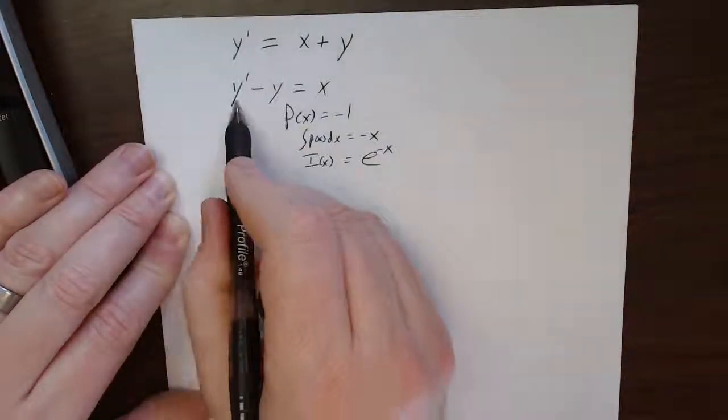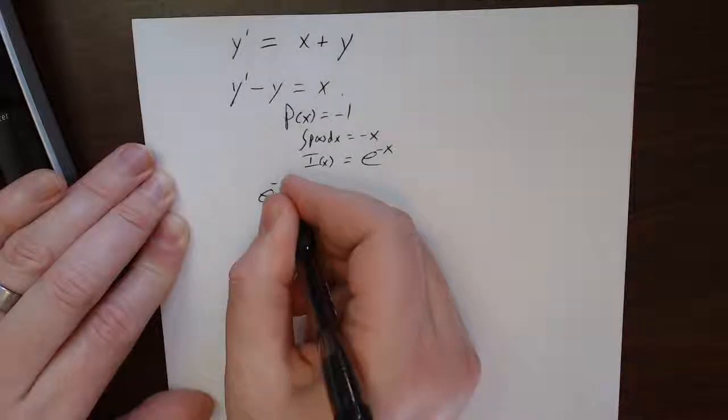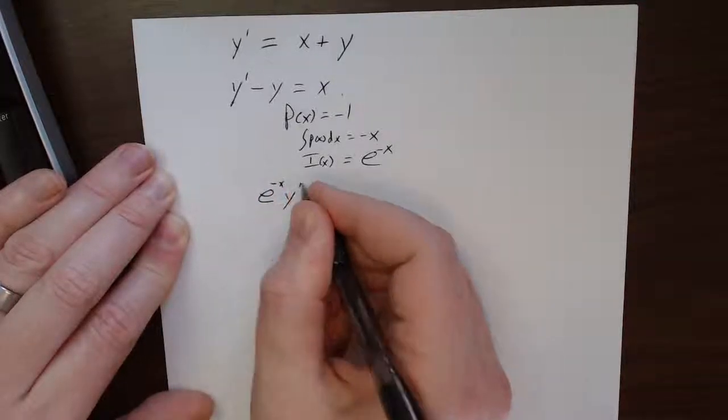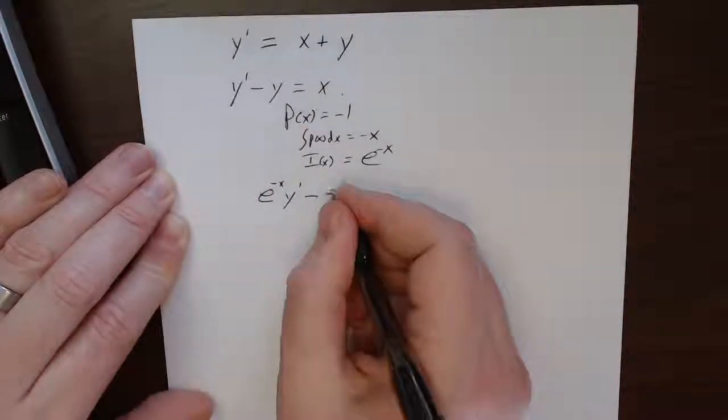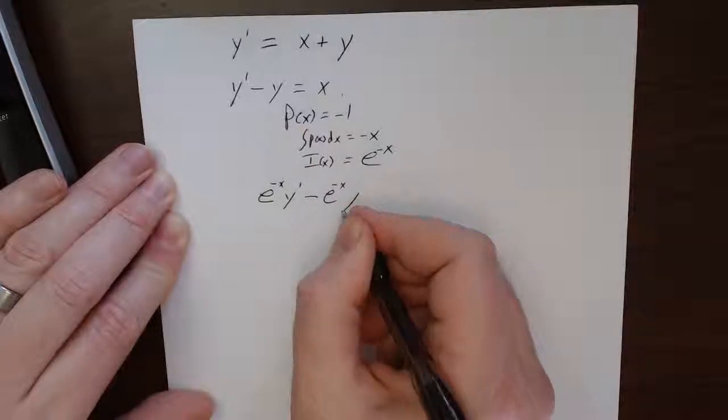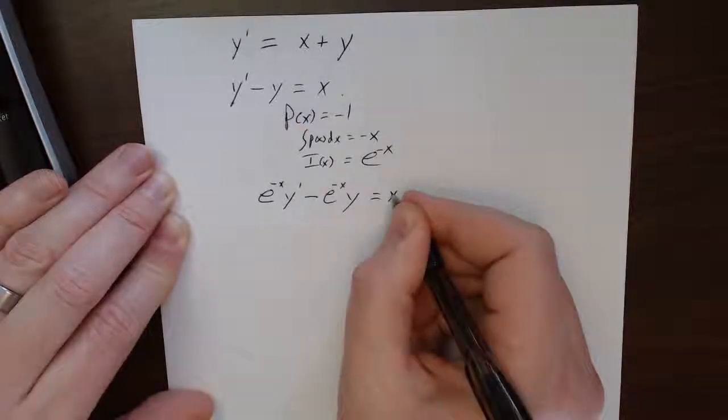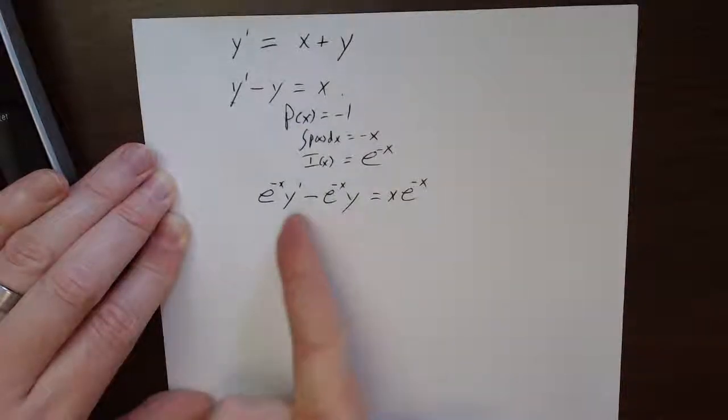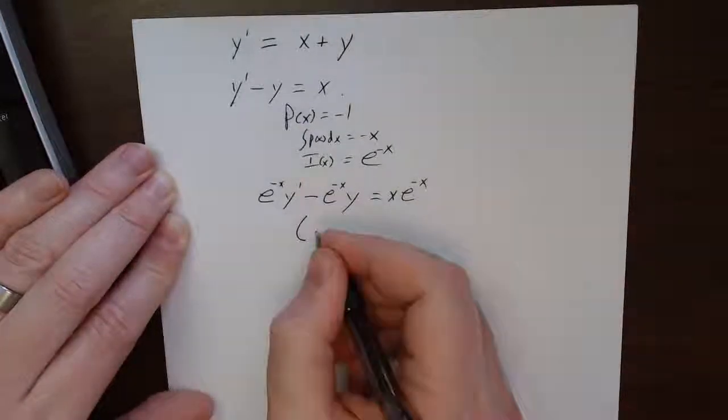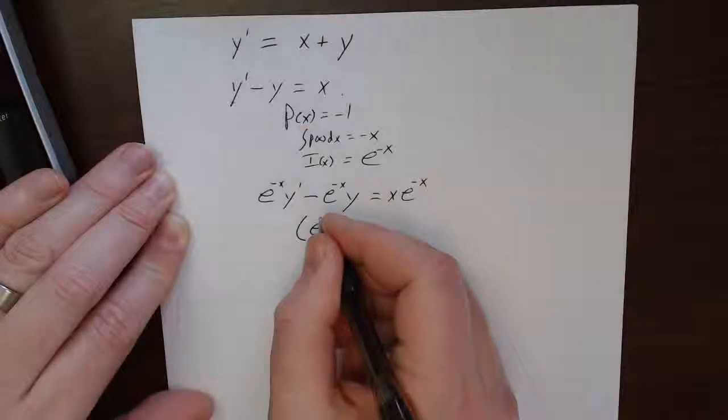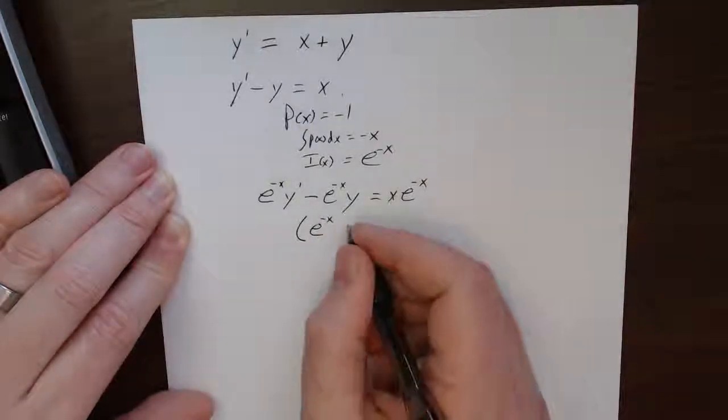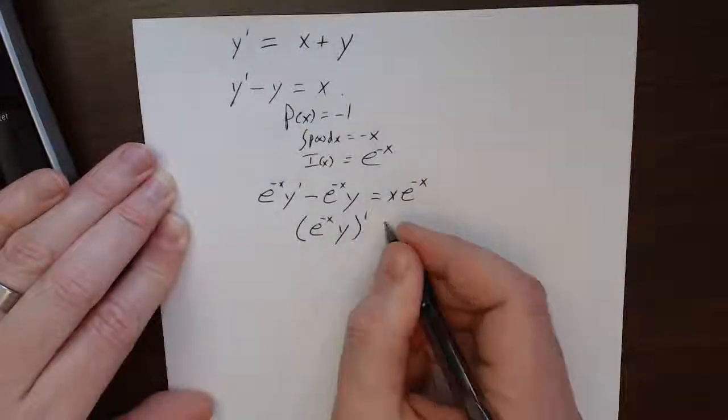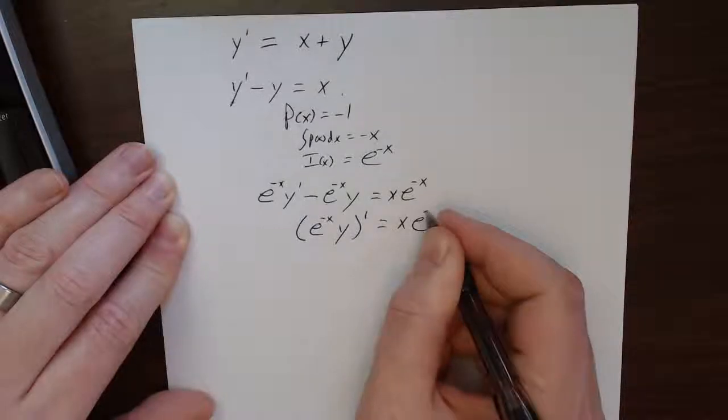And so, my integrating factor is e to the minus x. If I multiply both sides of this up here by that, I get e to the minus x, y prime, minus e to the minus x, y, equals x, e to the minus x. But that is product rule. That simply is e to the minus x, y prime equals x, e to the minus x.